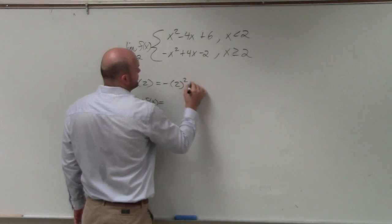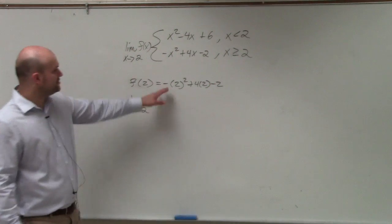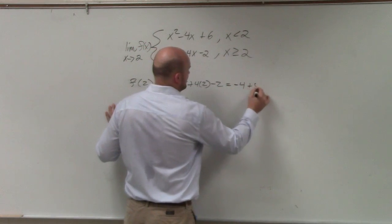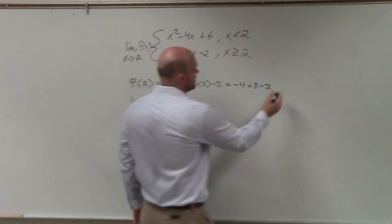So that's negative 2 squared plus 4 times 2 minus 2. Therefore, 2 squared is 4, times negative. So that equals negative 4 plus 8 minus 2. I'm getting a value of 2.